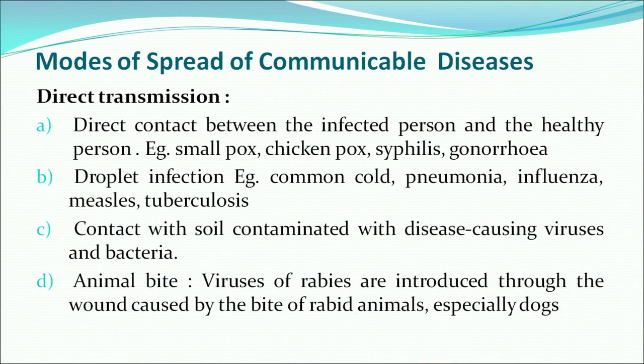Now we come on to the modes of spread of communicable diseases. First is direct transmission, which means direct contact between the infected person and the healthy person. Examples of these diseases are smallpox, chickenpox, syphilis, gonorrhea, and droplet infection. Examples of droplet infection include common cold, pneumonia, influenza, measles, tuberculosis. It can also occur through contact with contaminated soil or through animal bite.